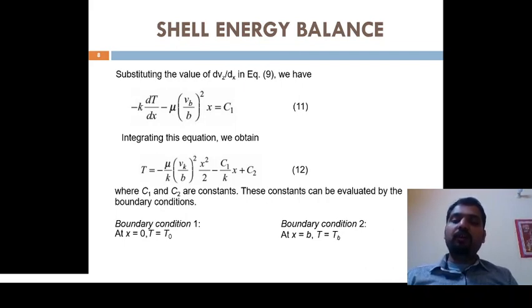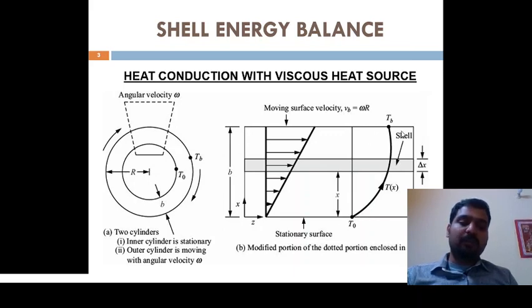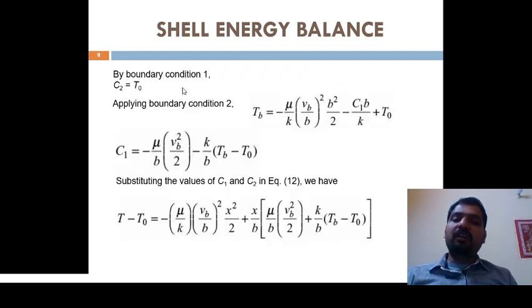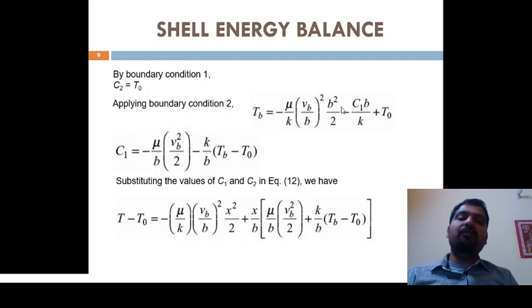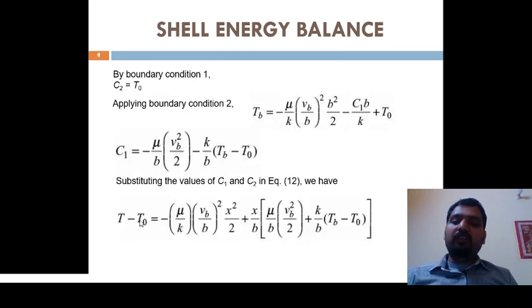Since two constants C1 and C2 are unknown, we apply two boundary conditions. The first boundary condition is at x = 0, T = T0, and the second is at x = b, T = Tb. Applying the first boundary condition gives C2 = T0. Applying the second gives C1 in terms of temperature. Substituting C1 and C2 back into the equation gives the temperature profile: T − T0 = −(μ/k)(Vb/b)²·(x²/2) + x/b·[μ/b·(Vb/b)²·(b²/2) + k/b·(Tb − T0)].